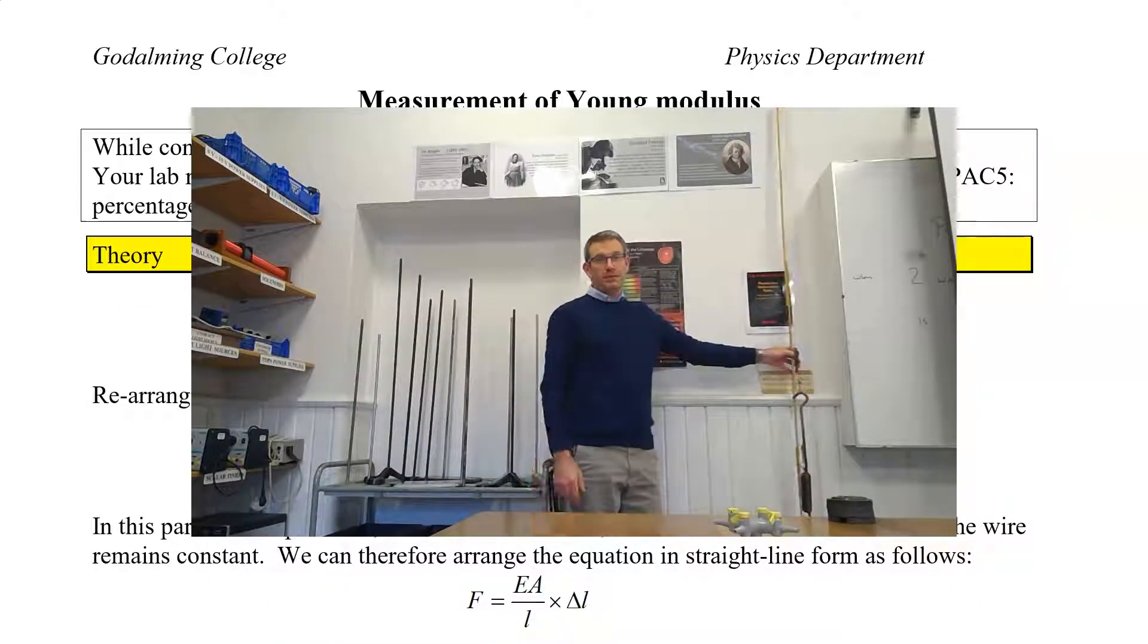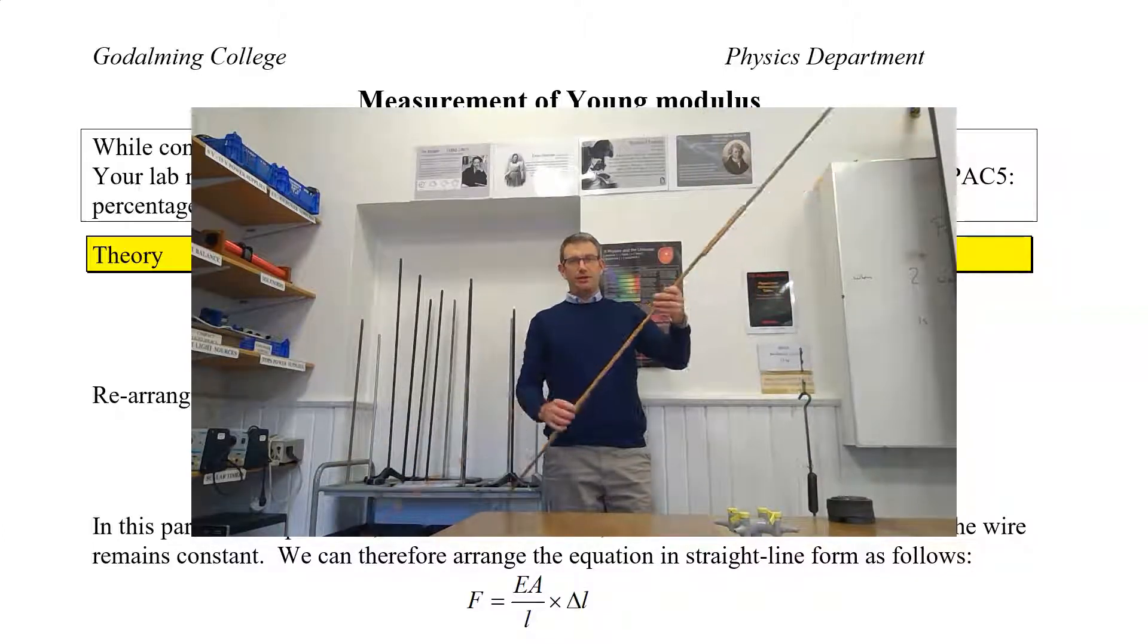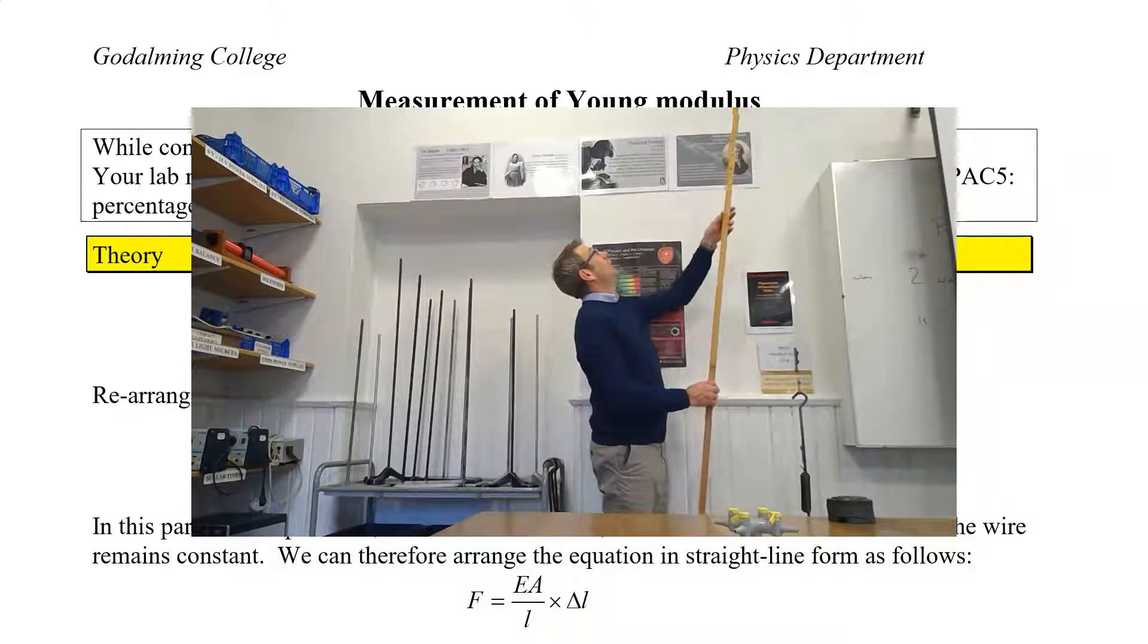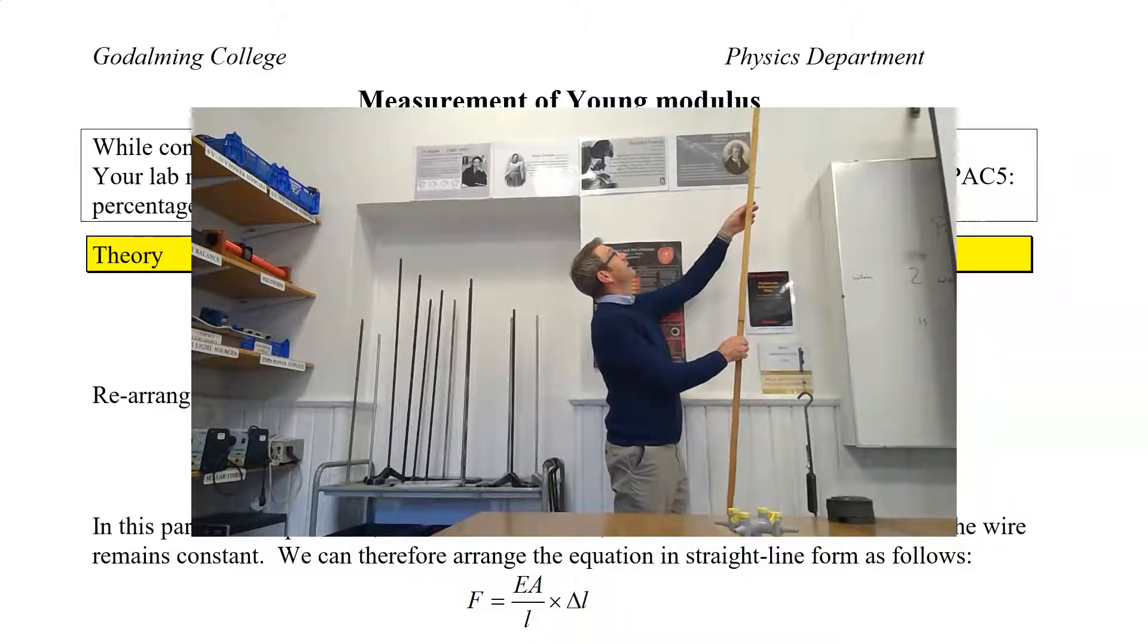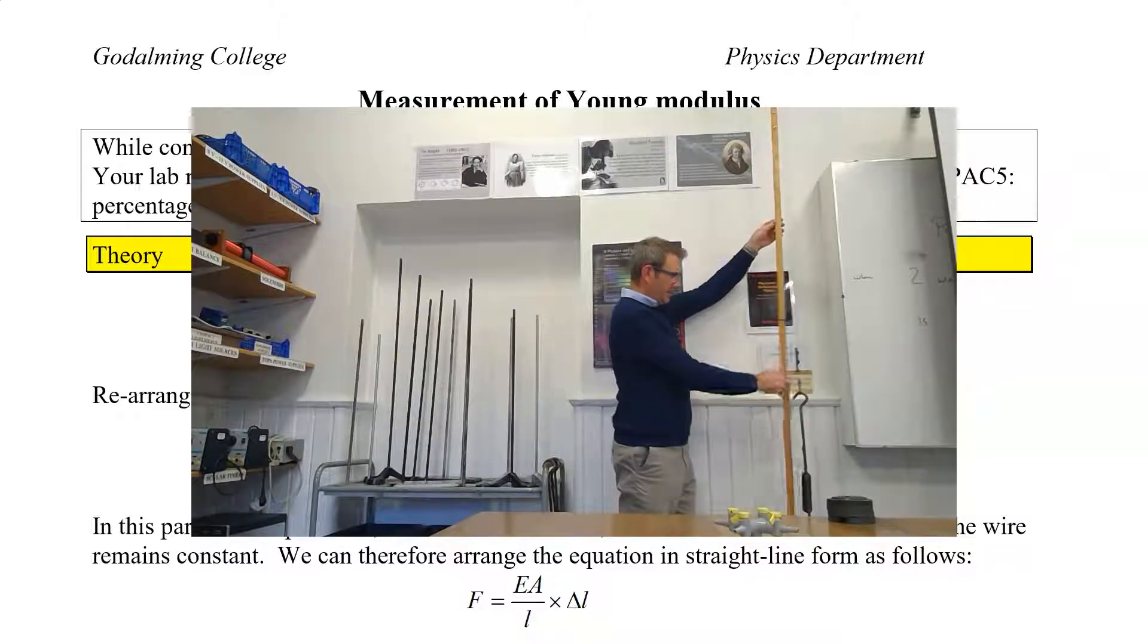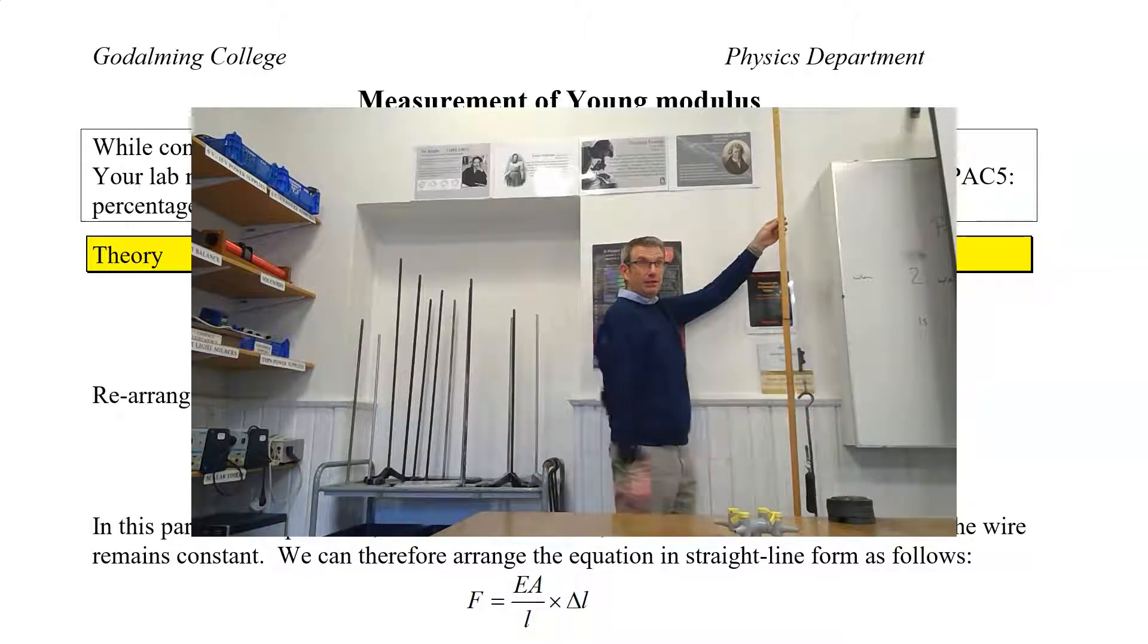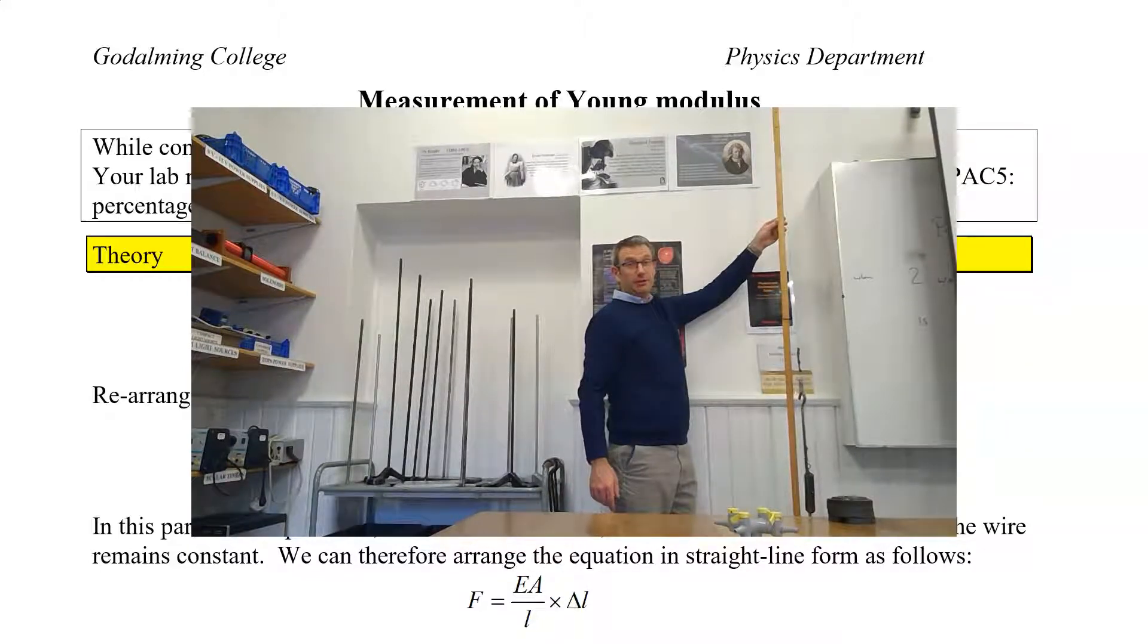In addition to making those extension measurements, you are also going to have to measure the original length using this highly technical piece of kit that looks like a little meter ruler stuck together. You are going to measure it at the top of the vernier scale because that is where the extension is being measured to.